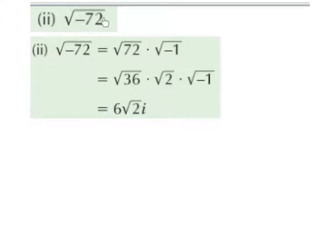Next, we're going to work out the square root of minus 72. We cannot get the square root of a negative number, so we break it down to be positive 72 and minus 1, because 72 times minus 1 is minus 72. So we get the square root of 72 multiplied by the square root of minus 1. This dot represents multiply.